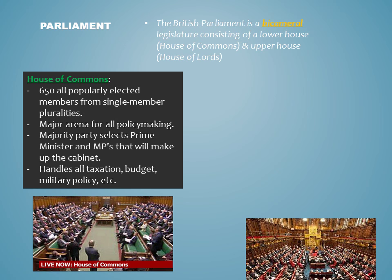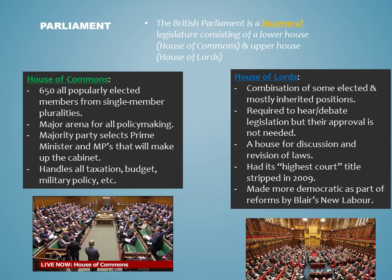The House of Commons handles all major policy areas, including taxation, the federal budget, the military, and much more. The House of Lords, on the other hand, is a combination of some elected positions, but most who get it through heredity. They are required to hear and debate all pieces of legislation, but their approval is not needed before a royal assent. The House is mainly used as a revisionist chamber, which used to have the functionality of being the highest court in the land. It has been made slightly more democratic with a few elected positions, as part of the reforms put in place in the 1990s by Tony Blair's New Labour.